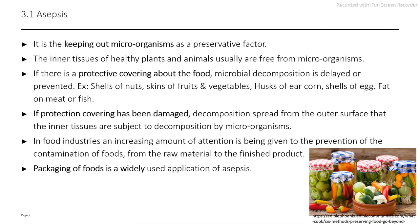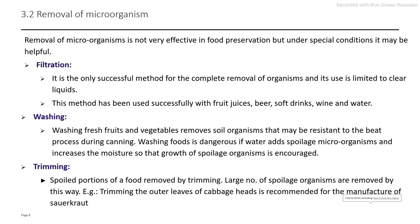Second method is the removing of microorganisms. In this method, whatever microbial load is present on that food is removed by using one or more techniques. The first is the filtration process — used for liquid food processing. Then washing process for fruits, vegetables, soil, and all raw materials where cleaning is carried out. Then trimming process — the specific contaminated part of that food is trimmed out to reduce the microbial load and extend the shelf life of that food.